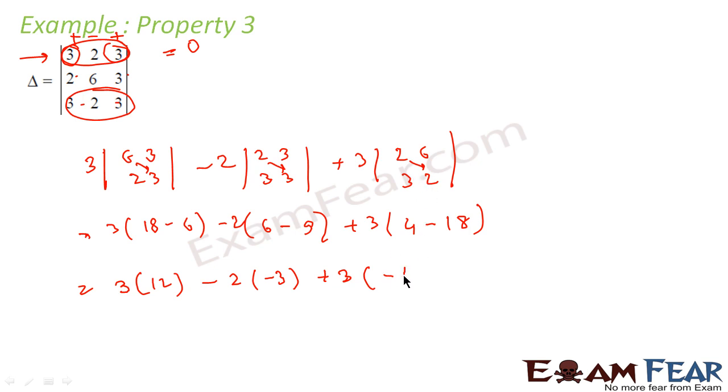2 minus 14. This is nothing but 3 into 12 is 36 plus - minus minus is plus - 2 into 3 is 6, plus 3 into 14 is 42. This is nothing but 42 minus 42, that is 0.